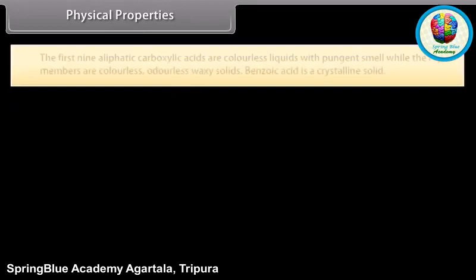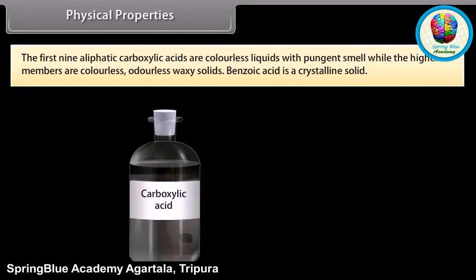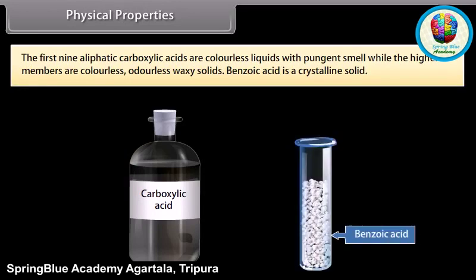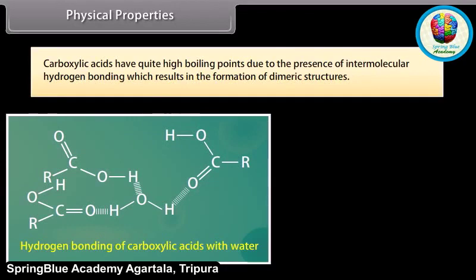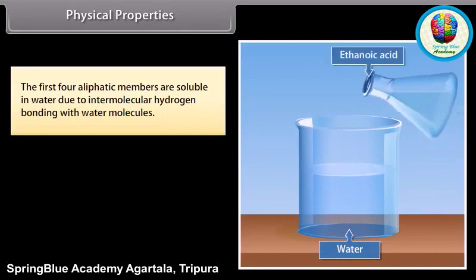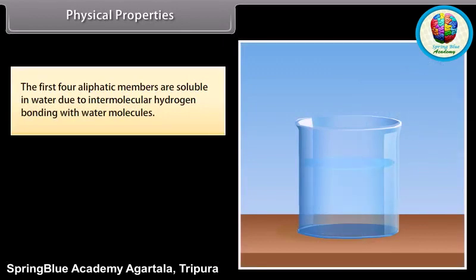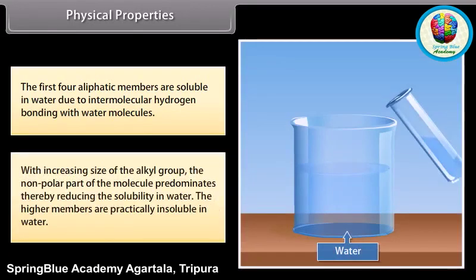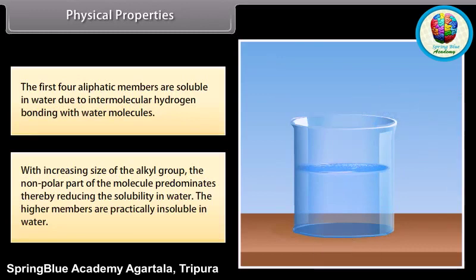Physical properties: the first nine aliphatic carboxylic acids are colorless liquids with pungent smell, while the higher members are colorless, odorless, waxy solids. Benzoic acid is a crystalline solid. Carboxylic acids have quite high boiling points due to the presence of intermolecular hydrogen bonding, which results in the formation of dimeric structures. The first four aliphatic members are soluble in water due to intermolecular hydrogen bonding with water molecules. With increasing size of the alkyl group, the nonpolar part of the molecule predominates, thereby reducing solubility in water; the higher members are practically insoluble in water.